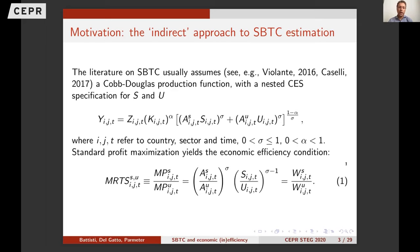I'll go quite quickly on this because it's very standard. The standard approach to skill-based technical change estimation relies on a CES production function, sometimes nested in a Cobb-Douglas, with at least two kinds of labor inputs — skilled and unskilled — and one or more capital inputs. You have different technology parameters: neutral ones like Zeta, or input-specific ones like A_U and A_S. Standard profit maximization gives the efficiency condition: when we replace the ratio of marginal products for skilled and unskilled with the ratio of wages, we get this formula.